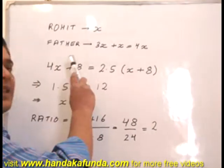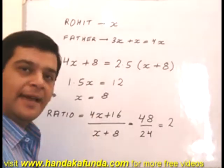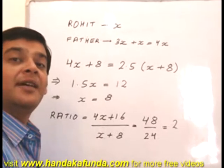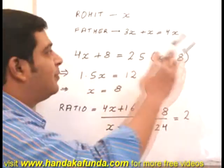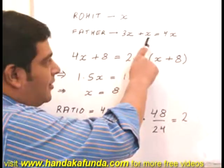Let us assume that the age of Rohit is X years. His father is 3 times older than him. That 3 times extra, 3 times more. So that is 3X, his own age X, which makes it 4X.